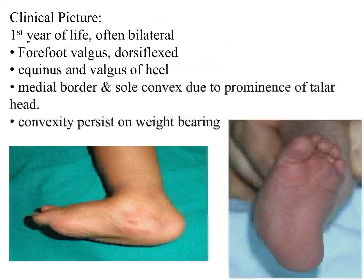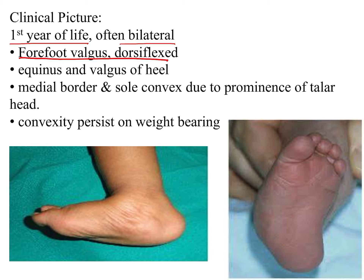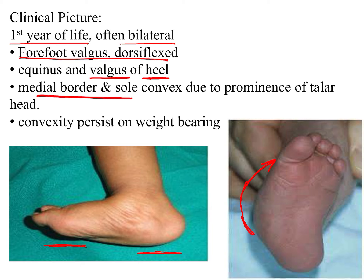The patient mostly presents to us in the first year of life, and this deformity is bilateral. The forefoot is in valgus and dorsiflexed. The hindfoot has equinus and valgus of the calcaneum. The medial border is convex, and the plantar border or sole is also convex because of the prominence of the talar head in equinus deformity, which leads to a convex-shaped sole.